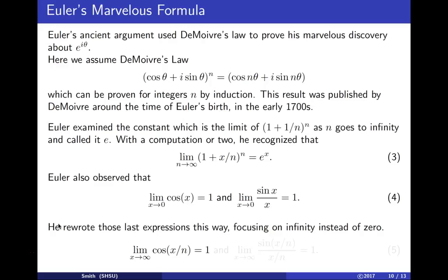The limit as n → ∞ of cos(x/n) is 1 because x/n → 0. Similarly, lim(n→∞) [sin(x/n)/(x/n)] = 1. Note the correction: it should be n → ∞, not x → ∞.